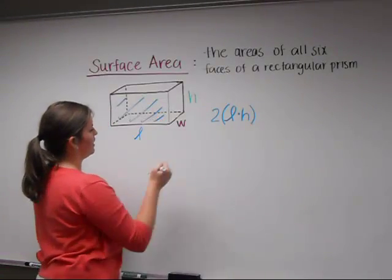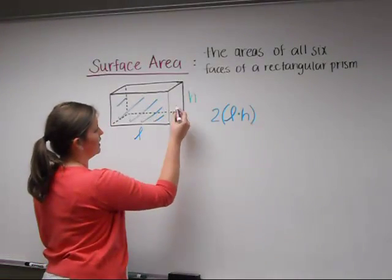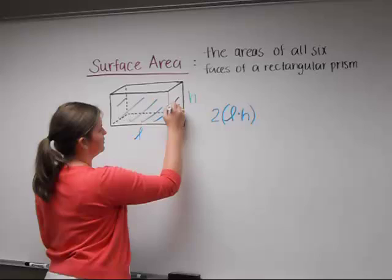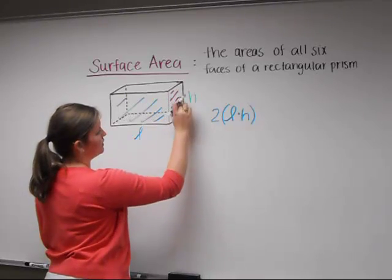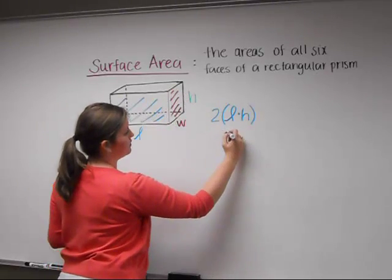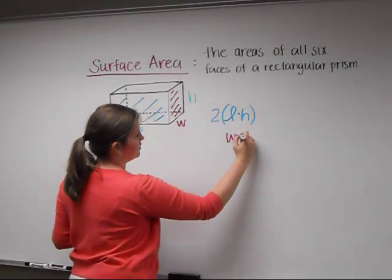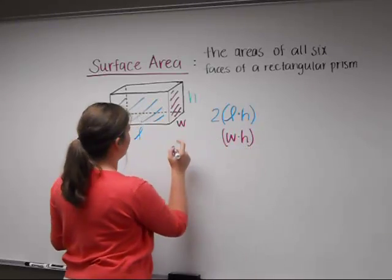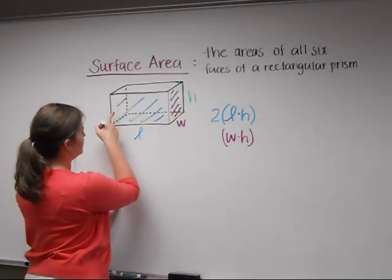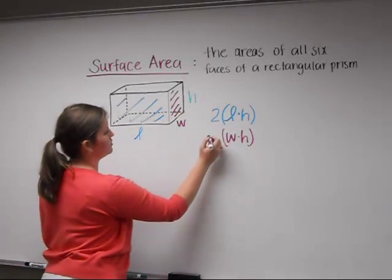Next, we want to find the area of this side rectangle, which is going to be our width times our height. And again, we can multiply this by two because of its twin side.